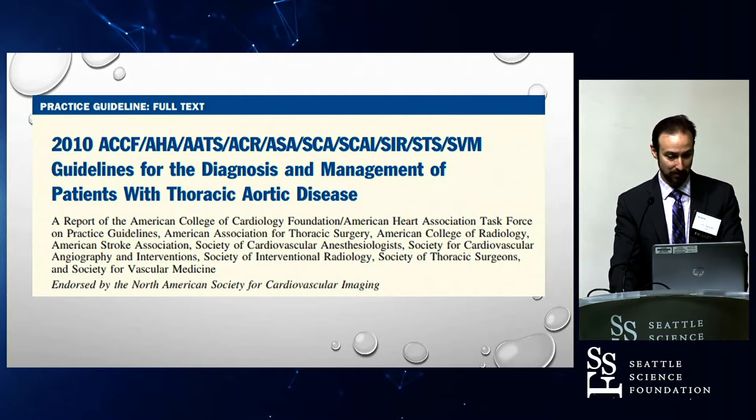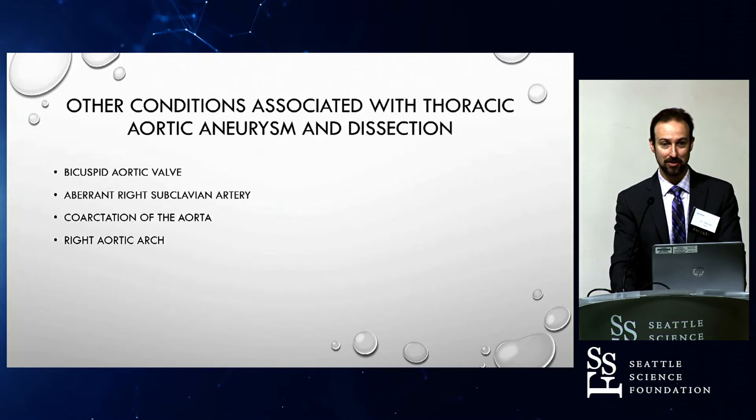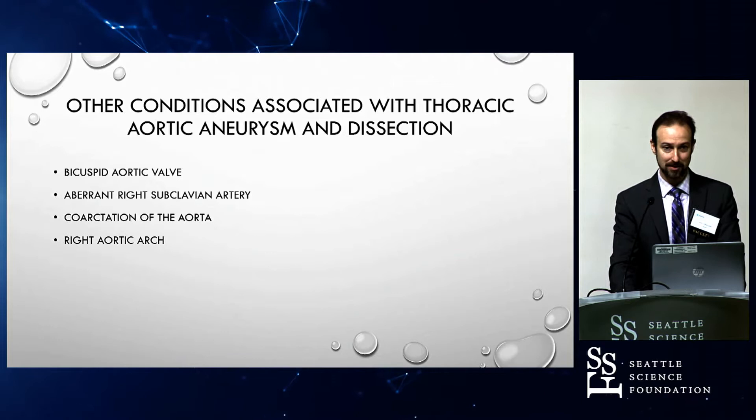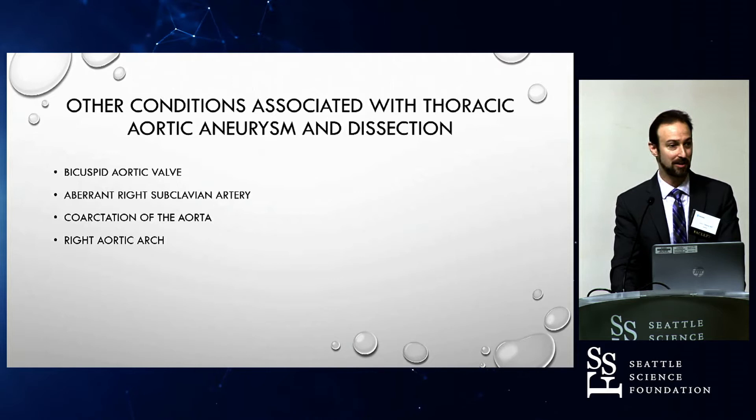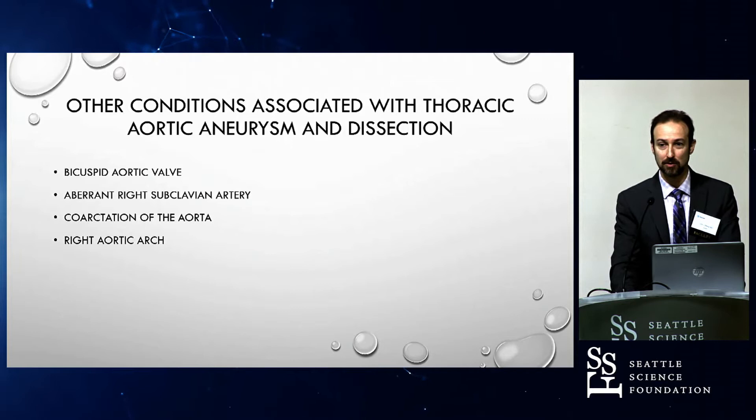We just saw a lot of different genes and certain diseases that were associated, but there are a few others that weren't mentioned. Although often we're making a diagnosis by CT scan, it is possible in some cases to have a heightened awareness. As an ER physician, primary care physician, or cardiologist evaluating these patients with certain symptoms — they may come in with chest pain — if they have some of these other things, you're going to be more in tune in looking for a thoracic aneurysm.